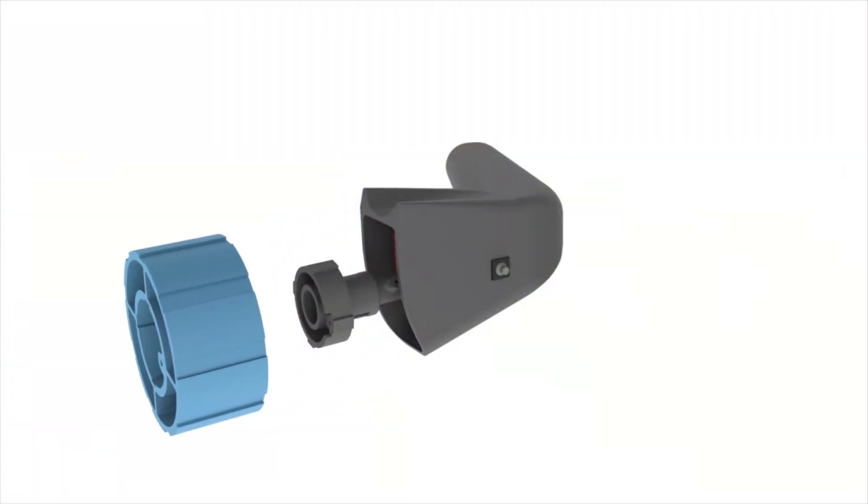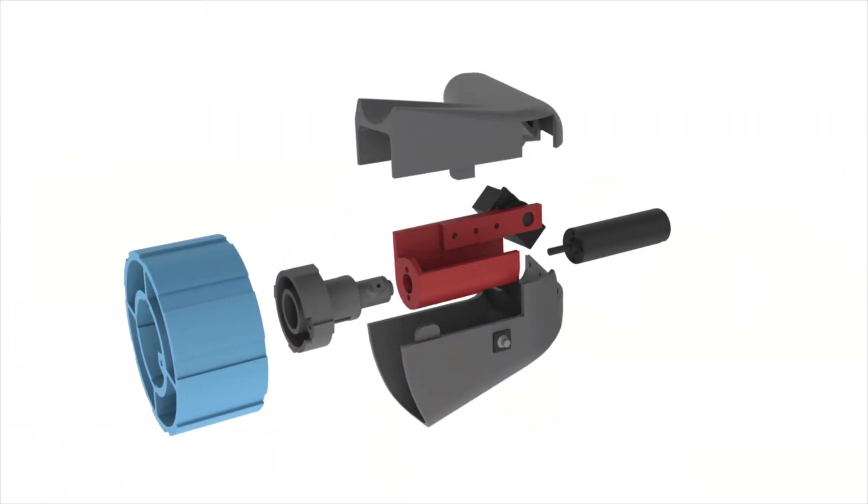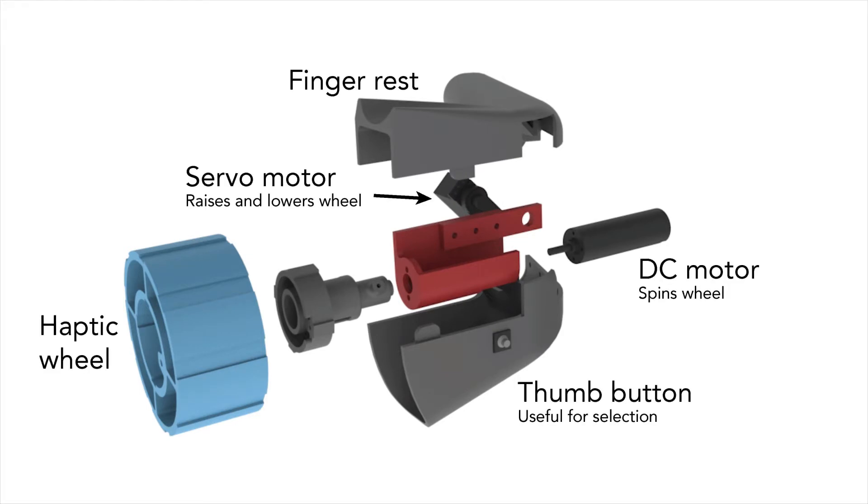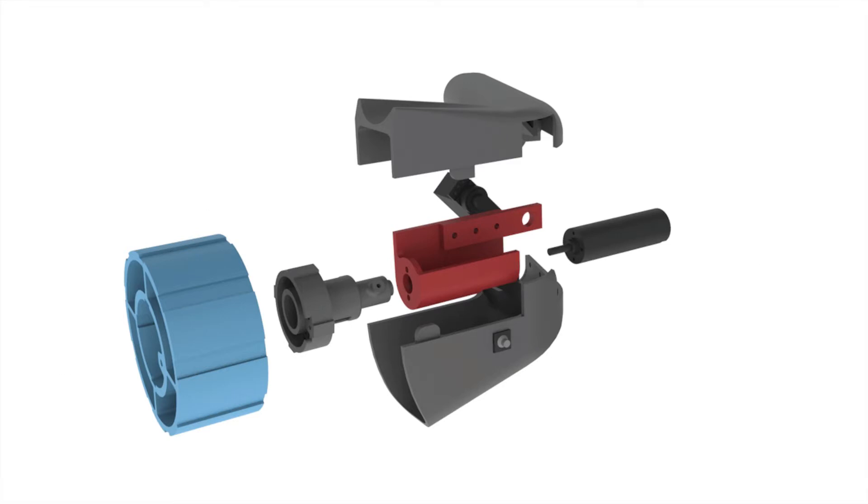The haptic revolver consists of a wheel that contains various haptic elements. A servo motor moves this wheel up and down as you contact a virtual surface. A DC motor spins the wheel to render shear forces and position haptic elements under the fingertip. The thumb button on the side of the controller enables input.